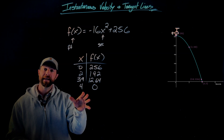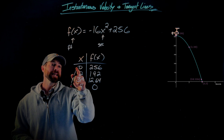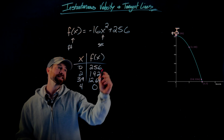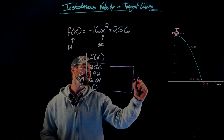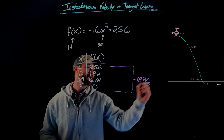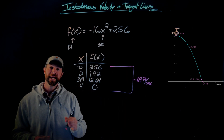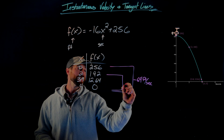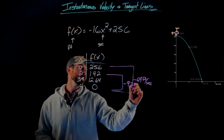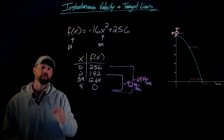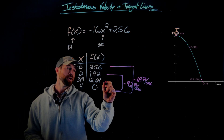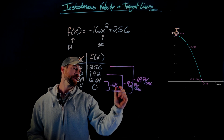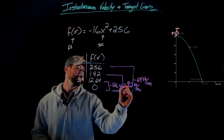We then used this information to find average speeds. Between the interval of zero and four seconds, since this object fell a total of 256 feet, we found that it had a velocity of negative 64 feet per second. Between two seconds and four seconds, this object had a velocity of negative 92 feet per second. And between 3.9 and four seconds, the velocity of this helicopter had reached negative 126.4 feet per second.